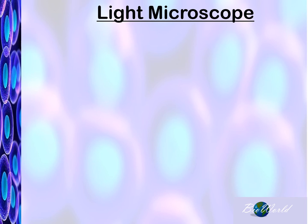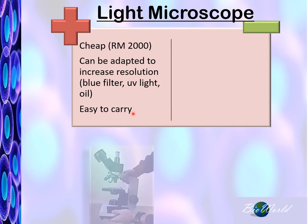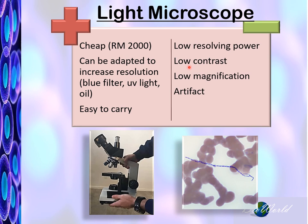In conclusion, we can say that the light microscope has a number of advantages. Mainly the fact that it is cheaper than the electron microscope. And for school use, it is very easy to carry around. But it has its disadvantages: it has low resolving power, which we can overcome by using a blue filter, UV light, or even a droplet of oil.